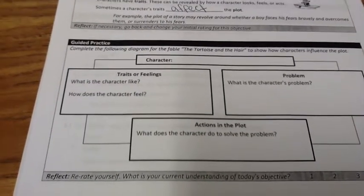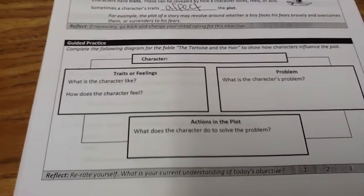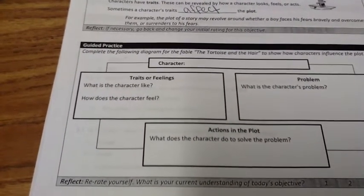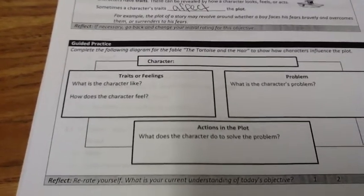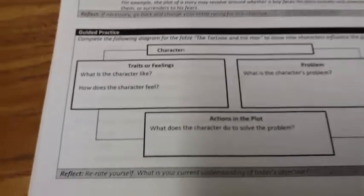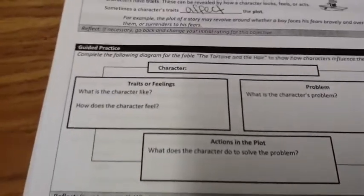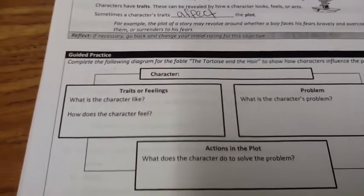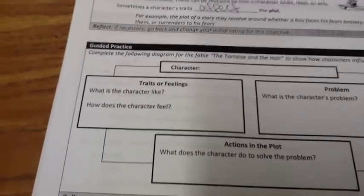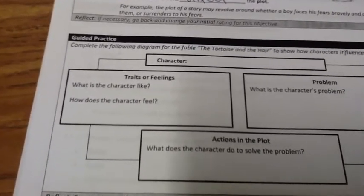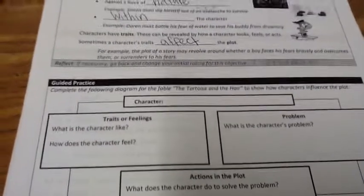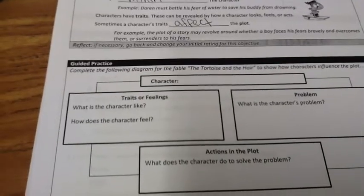The tortoise and the hare start their race, and instead of racing, the hare goes off to party. While the tortoise moves trudgingly along, he is determined to get to the end. The hare parties and takes a nap. Eventually, just as the tortoise is about to cross the finish line, the hare wakes up and realizes he's about to lose — but it's too late. The tortoise has already won the match because he was focused and kept going, while the hare played around and was not focused.